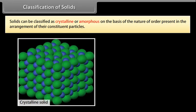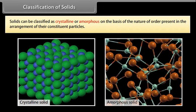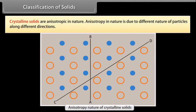Solids can be classified as crystalline or amorphous on the basis of the nature of order present in the arrangement of their constituent particles. Crystalline solids are anisotropic in nature. Anisotropy in nature is due to different nature of particles along different directions.